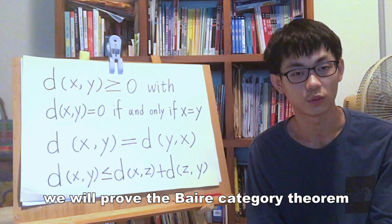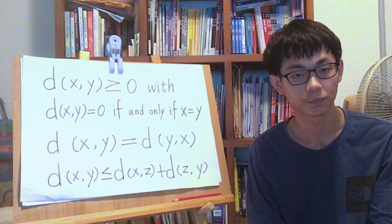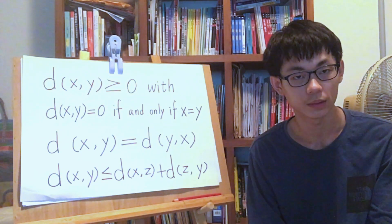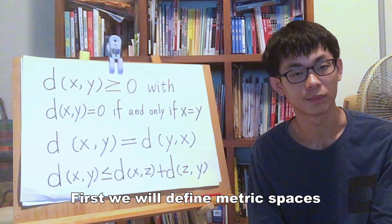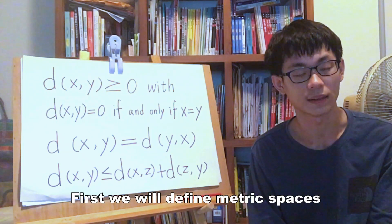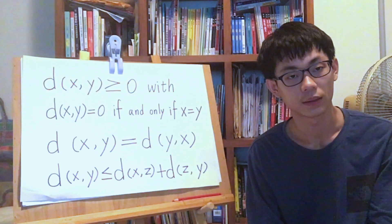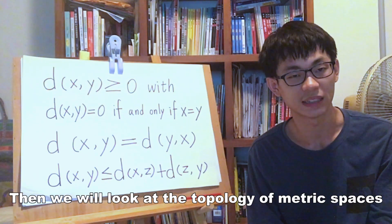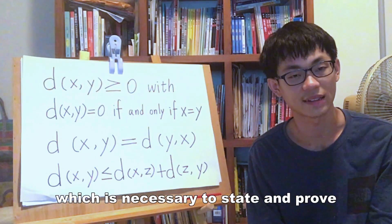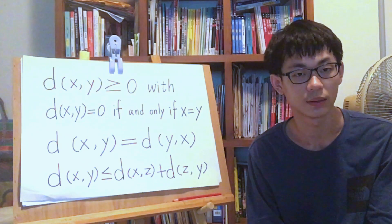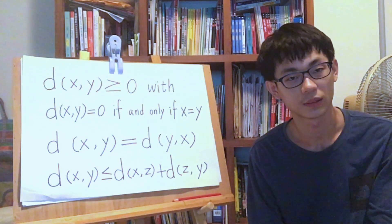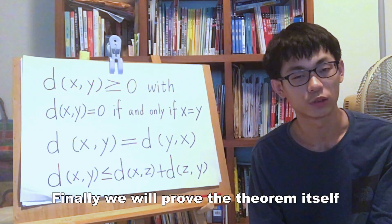In this video, we will prove the Baire category theorem. First, we will define metric spaces and completeness of metric spaces. Then, we will look at the topology of metric spaces, which is necessary to state and prove the Baire category theorem. Finally, we will prove the theorem itself.